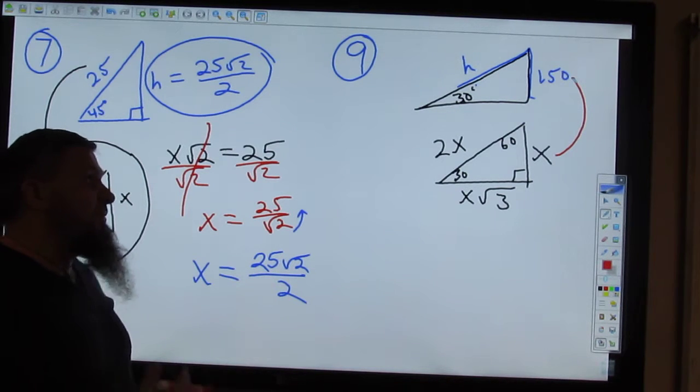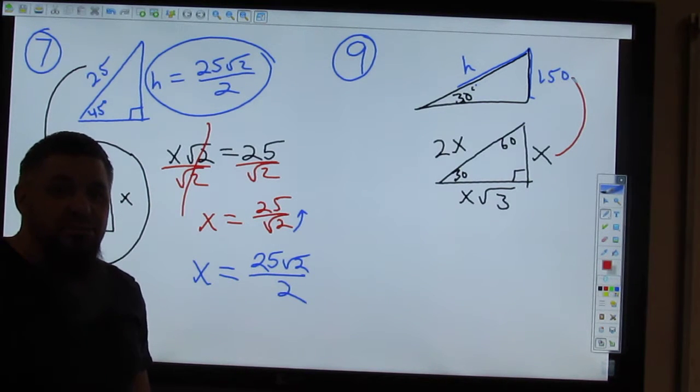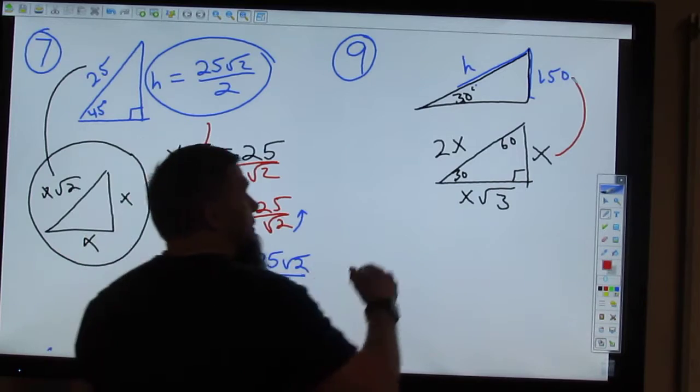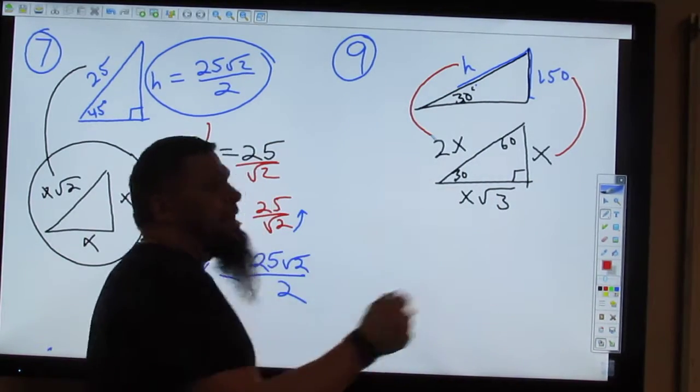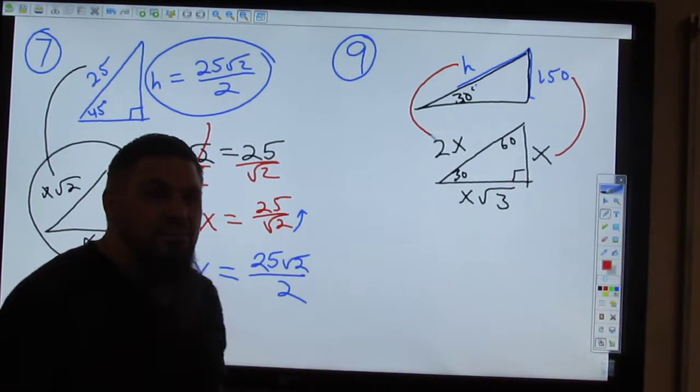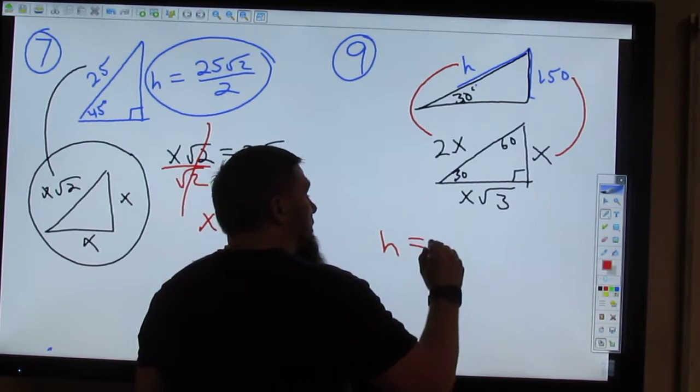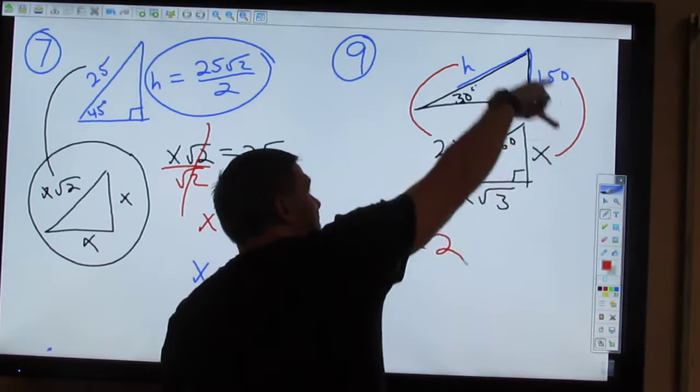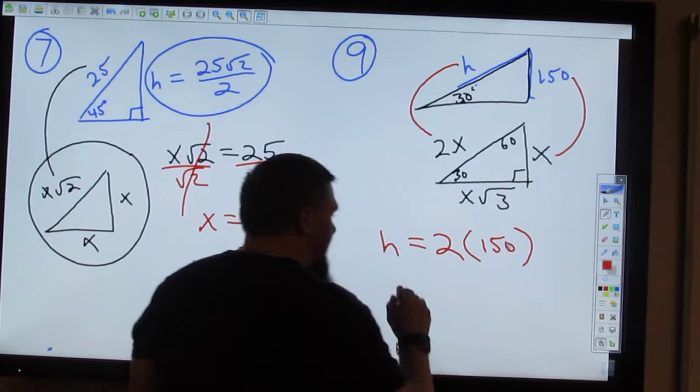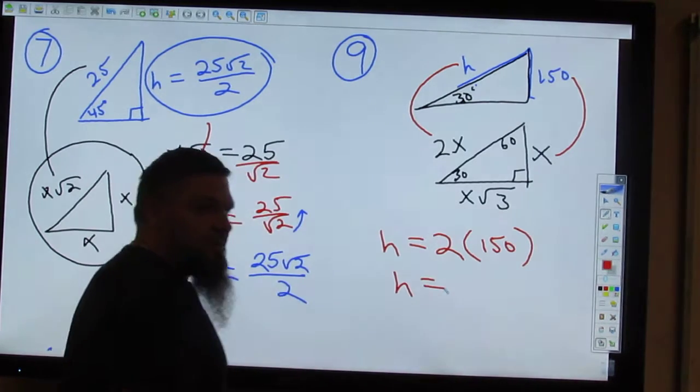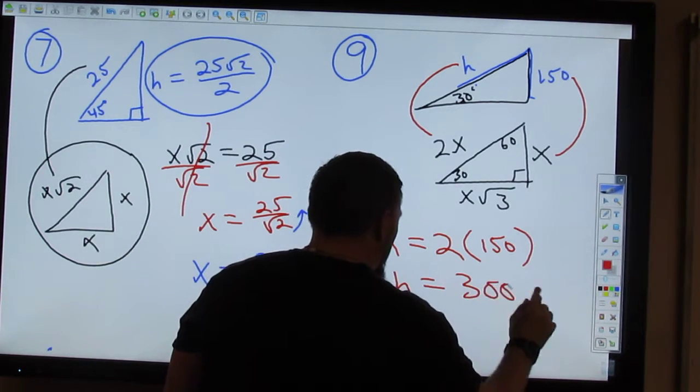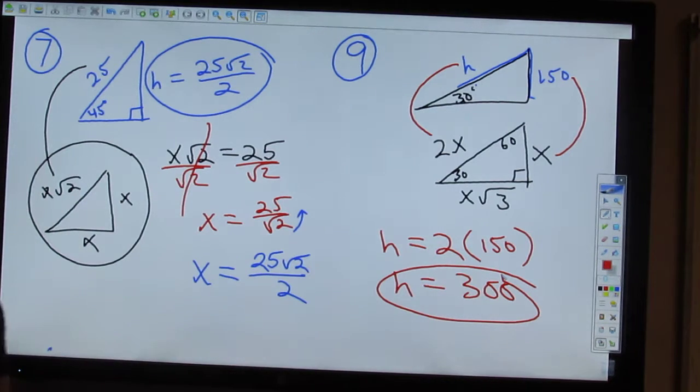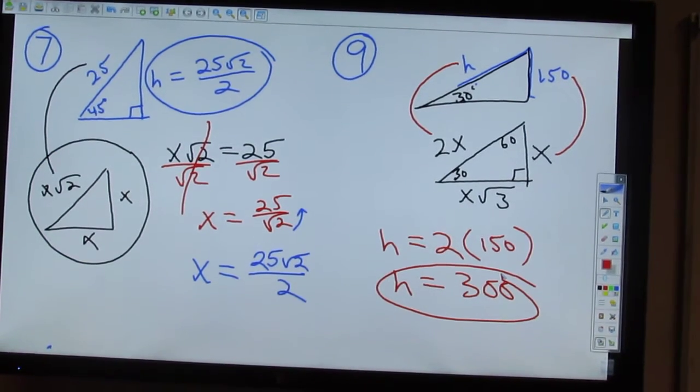So, X is 150. So, what's H? 2X. 2X. What's X? X is 150. So, 2 times 150. Okay. So, H equals? 30. 30. Are those 5's zeros? Zeros. All right.